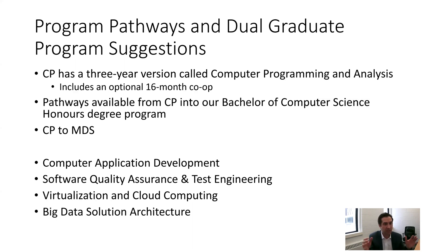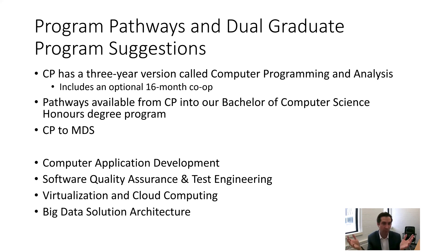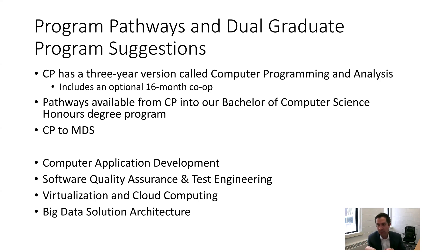Both Jim and Russ talked about how you can have different pathways through all of our programs. CP is a two-year diploma, and you can take that and go into any of our graduate certificates. There's also a three-year version of the computer programming diploma that dives a little more into advanced topics. Going from CP to MSD — those two programs — would be a really great pathway as well. You get that two-year diploma and then do the four-semester graduate certificate.